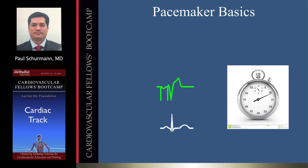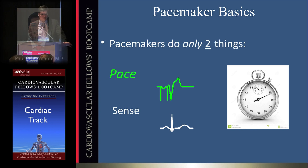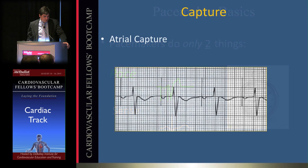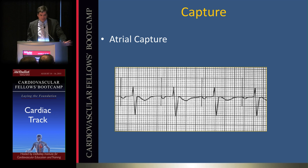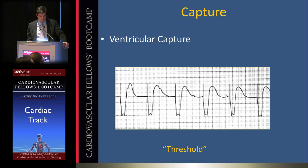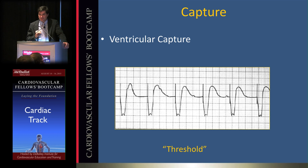A pacemaker is essentially a simple stopwatch designed to maintain rhythm. It performs two functions: pace and sense. For atrial capture, a pacing spike is followed by atrial depolarization, then a QRS and mechanical contraction. Ventricular capture produces a wider QRS after the spike. Threshold is defined as the minimum amount of energy necessary to capture the ventricle or atrium 100% of the time.